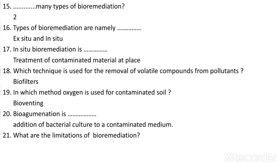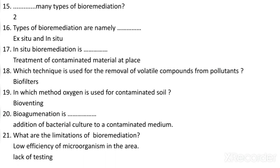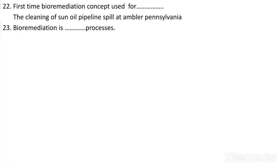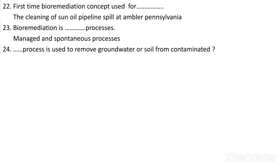Important limitations of bioremediation are the low efficiency of microorganisms in the area and lack of testing. The first time the bioremediation concept was used was for cleaning of a Sun Oil pipeline spill at Ambler, Pennsylvania. Bioremediation is a managed and spontaneous process, and the ex-situ process is used to remove contaminated groundwater or soil.